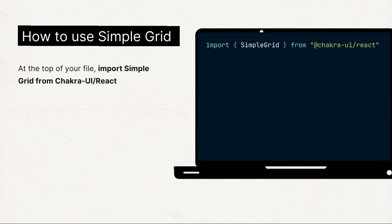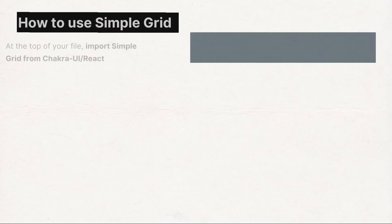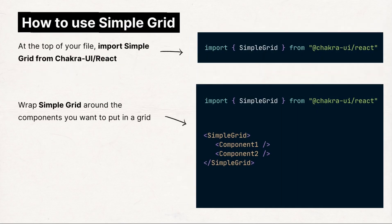To use Simple Grid, you need to import it at the top of your file and then wrap it around the components you want in your grid.